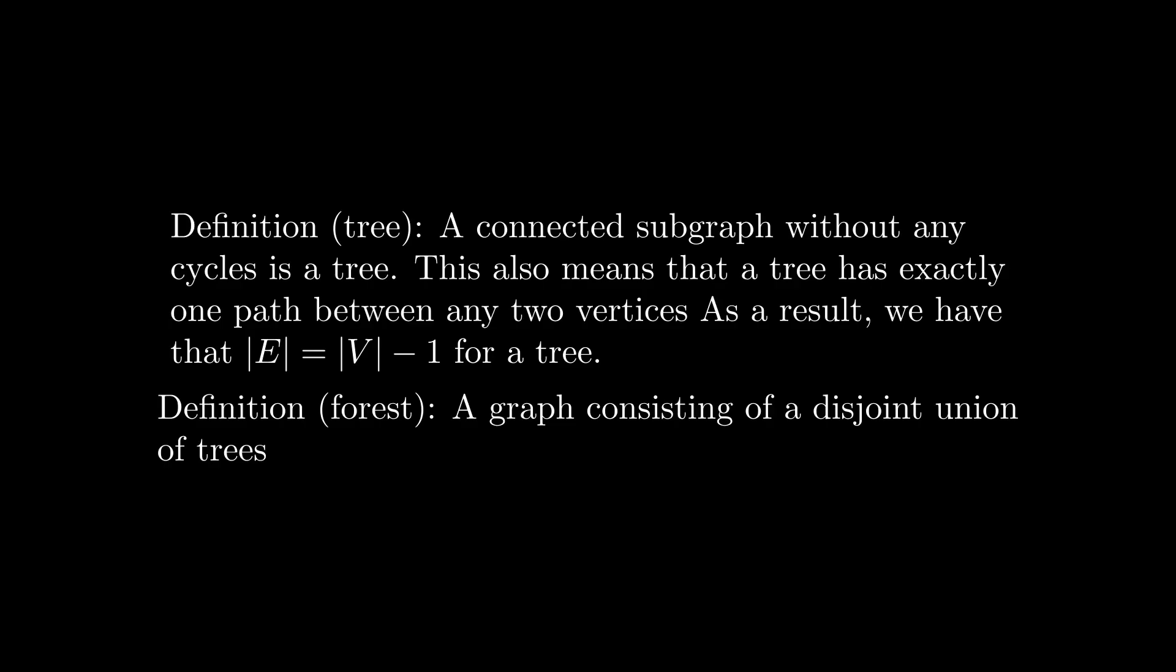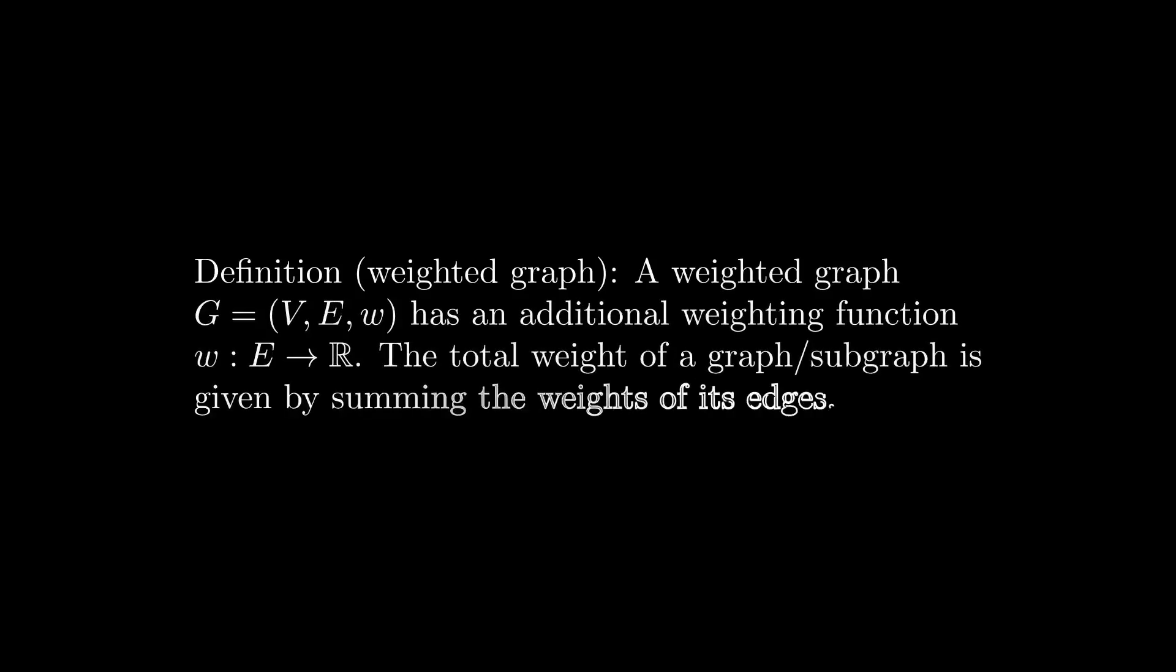A graph which consists entirely of disjoint unions of trees is known as a forest. We can modify the definition of a graph by adding a weighting function w, which maps edges to weight values. The total weight of a graph is given by adding the weights of all the edges together.